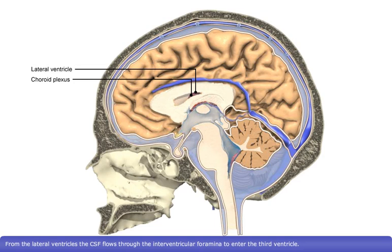From the lateral ventricles, the CSF flows through the interventricular foramina to enter the third ventricle.